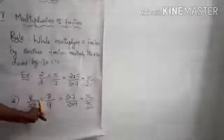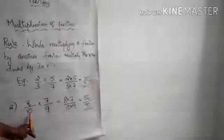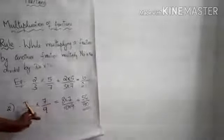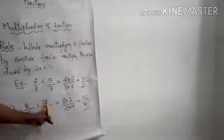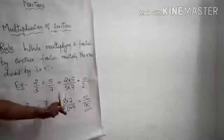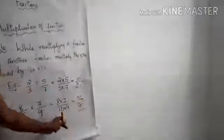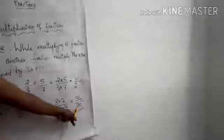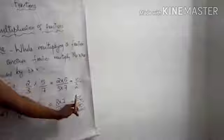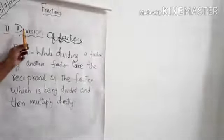Next example: 8/10 into 7/9. The numerators are 8 and 7, and the denominators are 10 and 9. Multiply directly: 8 into 7 all divided by 10 into 9. 8 into 7 is equal to 56, and 10 into 9 is equal to 90, so the answer is 56/90.